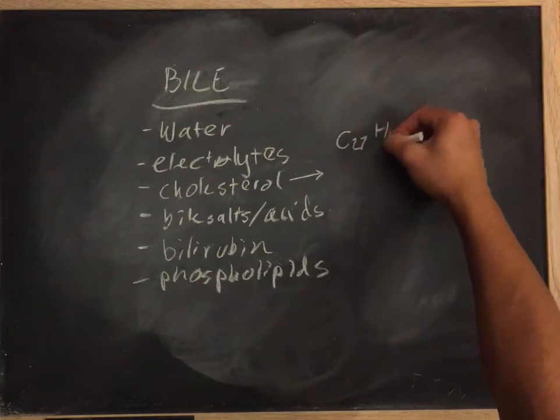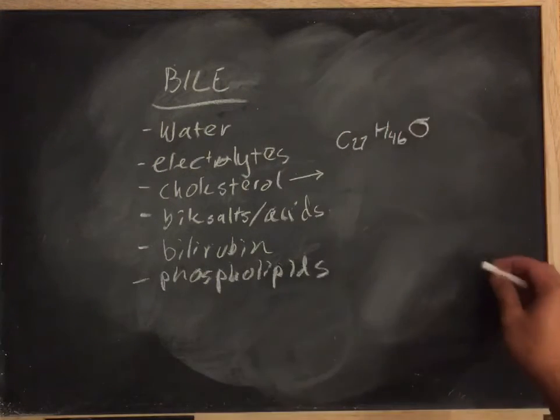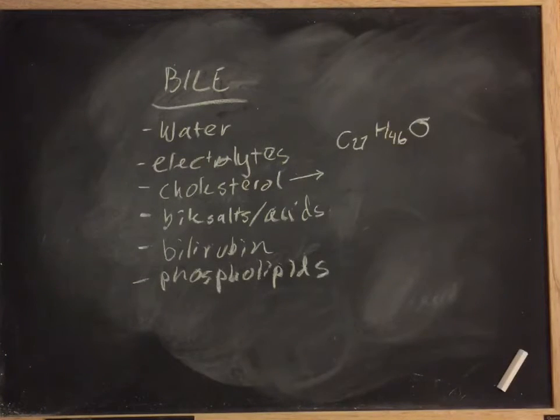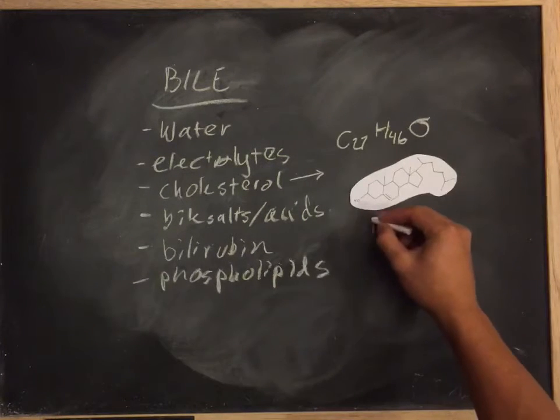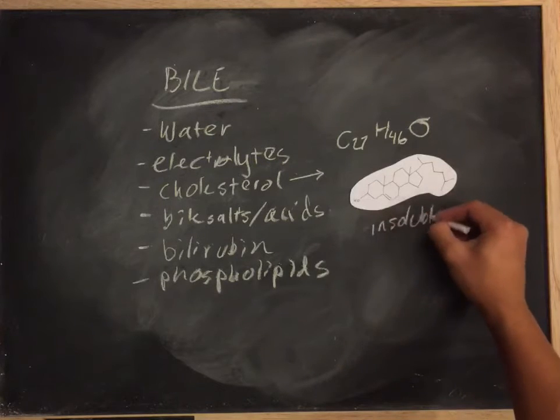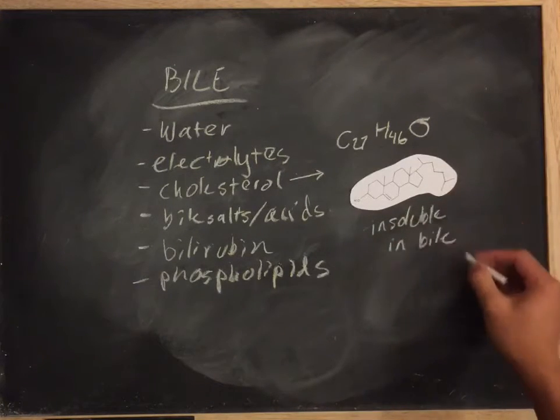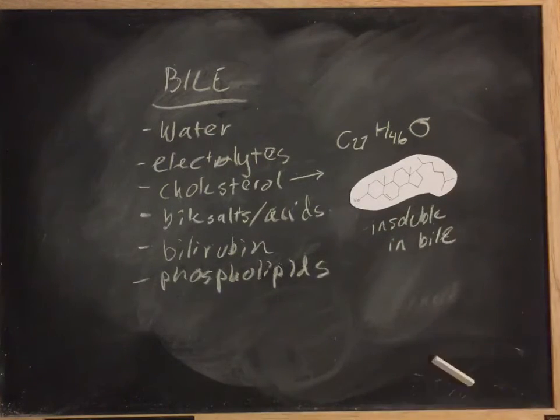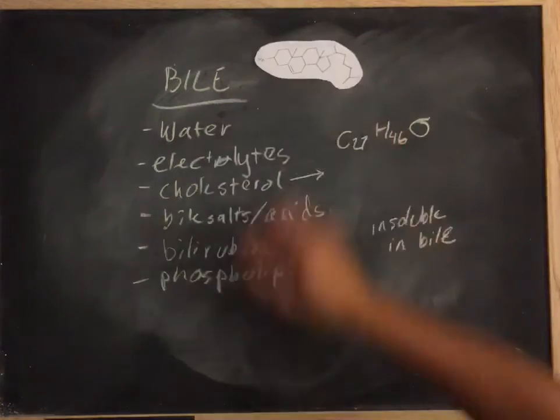Cholesterol, also known as C27H46O, that being its chemical formula, is one of the most important organic molecules found in bile. However, normally cholesterol is insoluble in bile.